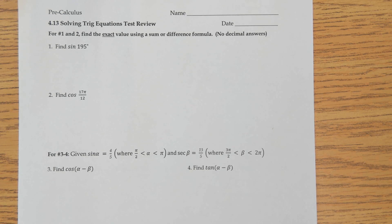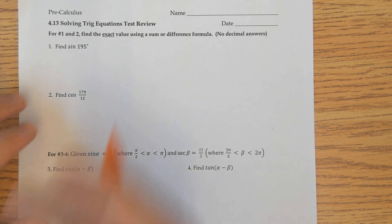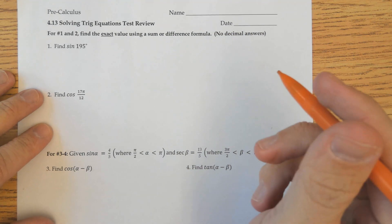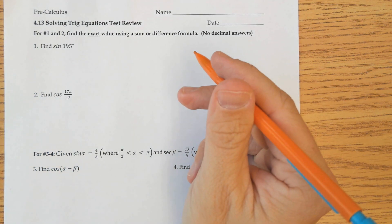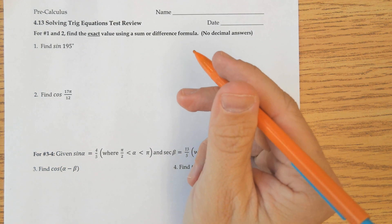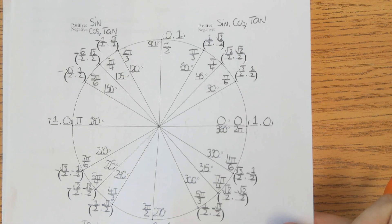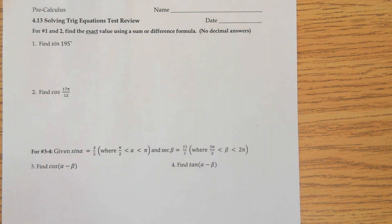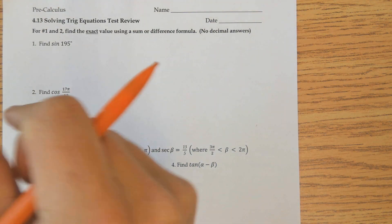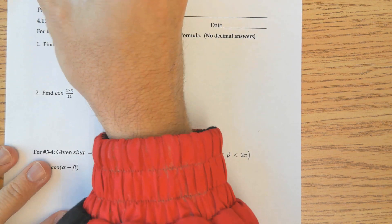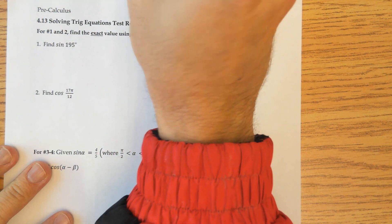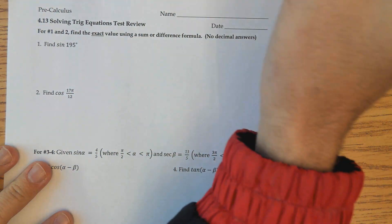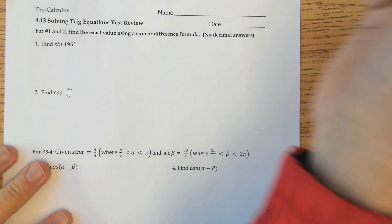All right, test review. Here we go. Find sine of 195 degrees. You are looking for two angles on your unit circle that add up to be 195 degrees, and so you're going to use a sum or difference identity for that.